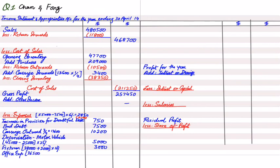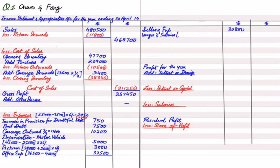Office expenses in the trial balance are 36,500. Note three states they are prepaid by 4,000, so we deduct 4,000. This prepaid amount appears as a current asset called other receivables. For wages and salaries: the trial balance shows 80,000 paid, but note four states that half of Fong's salary of 10,000 — that is 5,000 — has been paid and posted to wages and salary account.